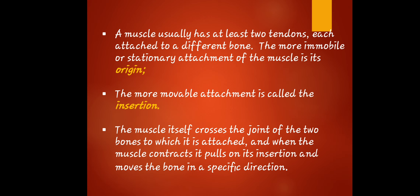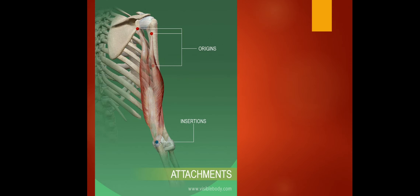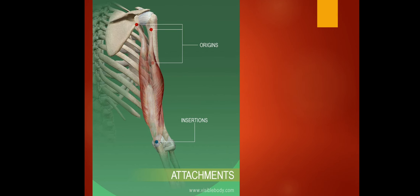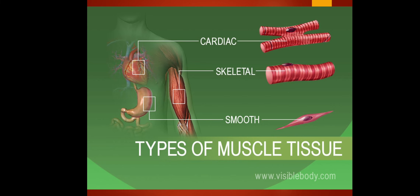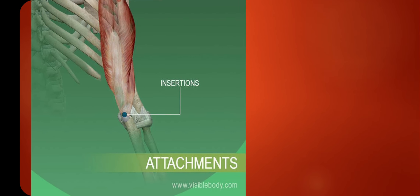When the muscle contracts, it pulls on its insertion and moves the bone in a specific direction. That explains the two types of tendon attachments: origin and insertion. As shown in the picture, the origin is the stationary attachment and the insertion is the movable attachment.